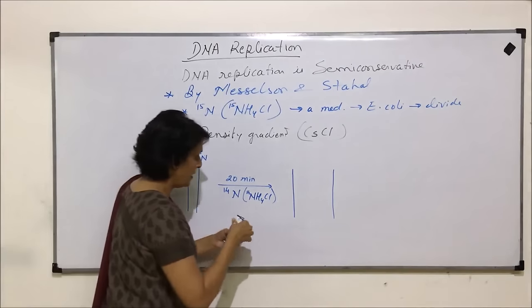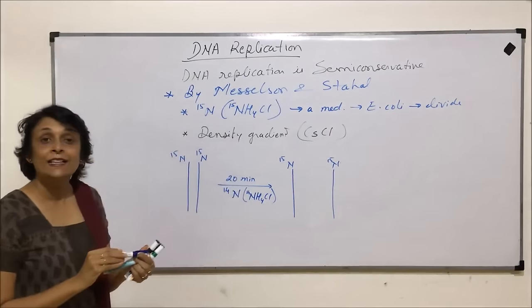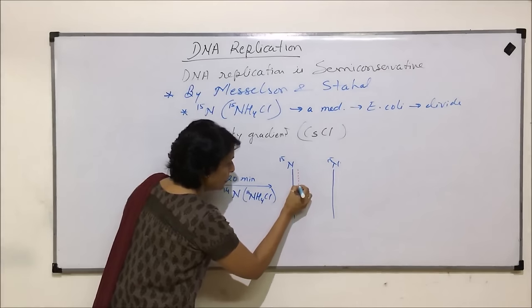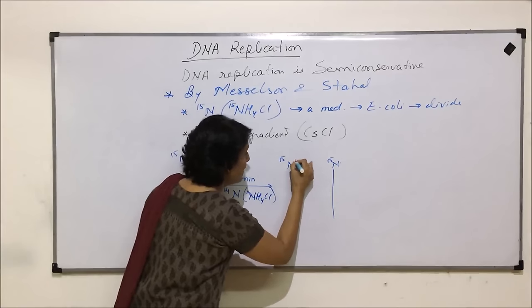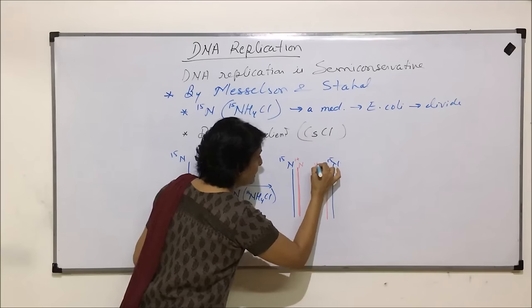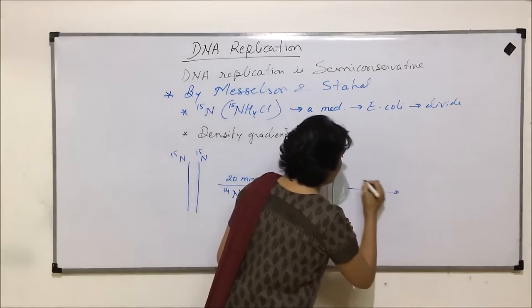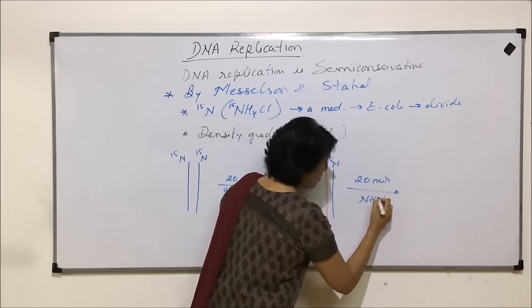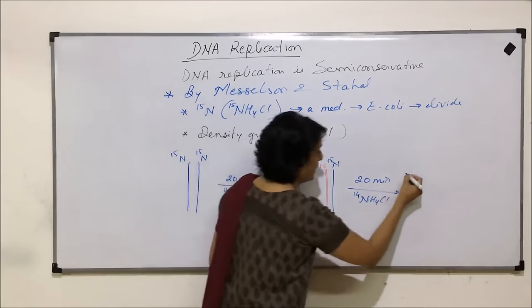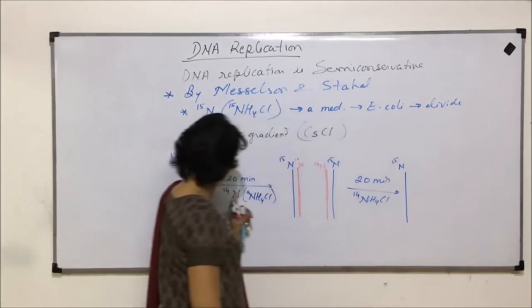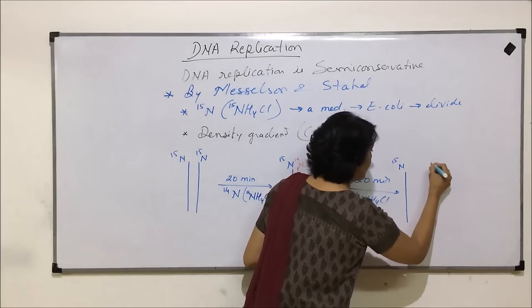The new strand — the parent strand contains N15. For the new DNA strand to be synthesized, the nitrogen available is N14, so the newly synthesized strand will have N14. The same thing happens on both sides — so after the first replication, each new DNA molecule has one N15 strand (from the parent) and one newly synthesized N14 strand.